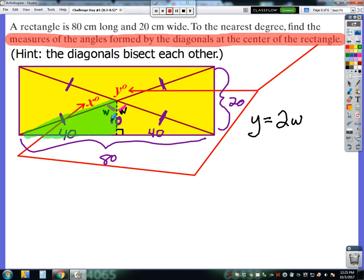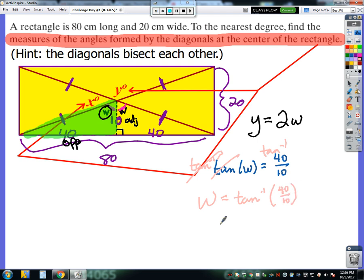So now what I get to look at is I've created some right triangles with some side lengths. In this right triangle, I have an unknown angle w, and I know the opposite side is 40 and I know the adjacent side is 10. So that's a tangent ratio. So I would set up this problem as the tangent of w is equal to the opposite over the adjacent. To solve for w, I would take the inverse tangent of both sides. So w is equal to the inverse tangent of 40 over 10, which is the same thing as 4. And so to the nearest degree, I get that w is equal to 76 degrees.